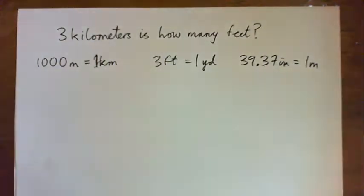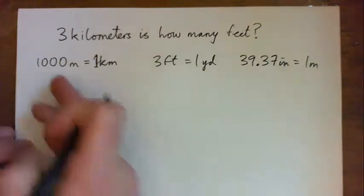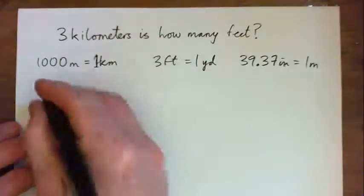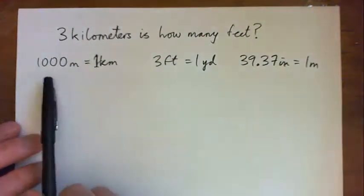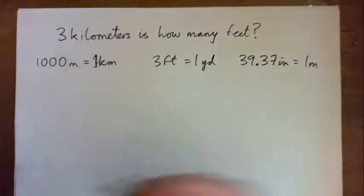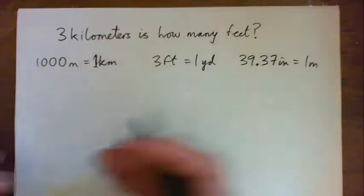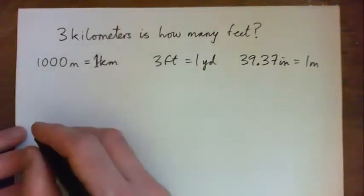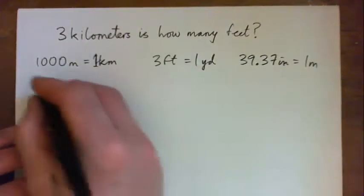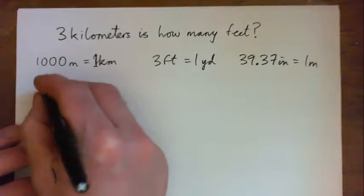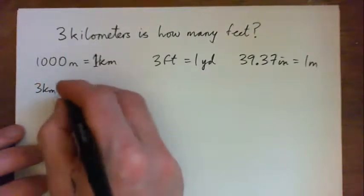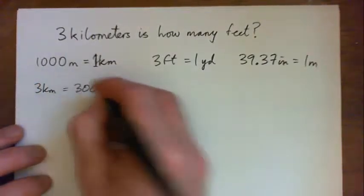So we could first of all just figure out how many meters are in three kilometers. Well, there's a thousand meters in one kilometer, so that means there's three thousand meters in three kilometers. So three kilometers is three thousand meters.